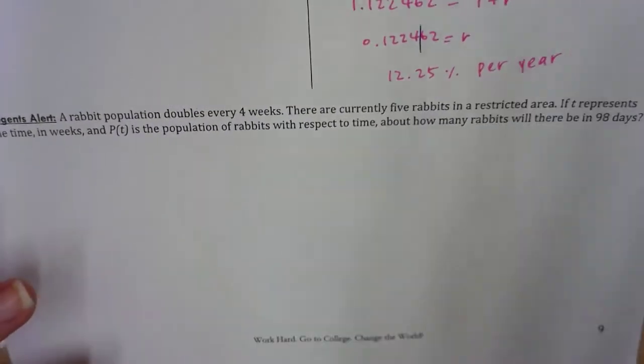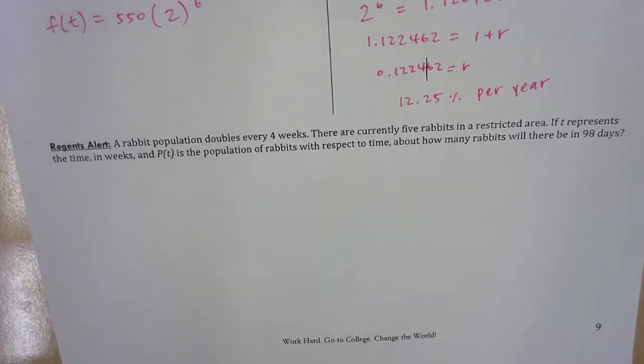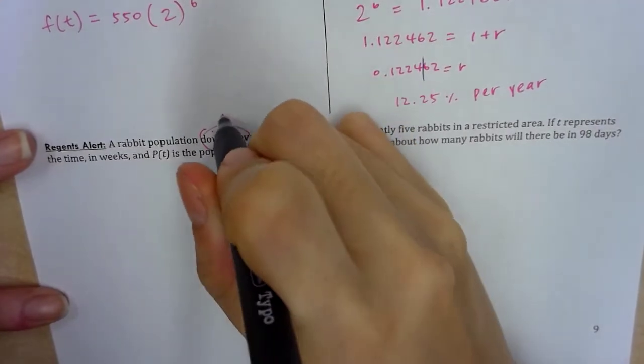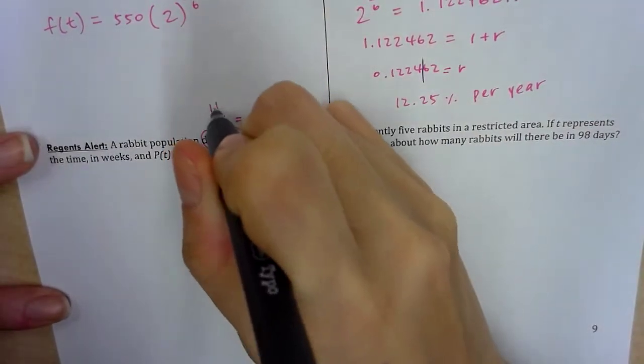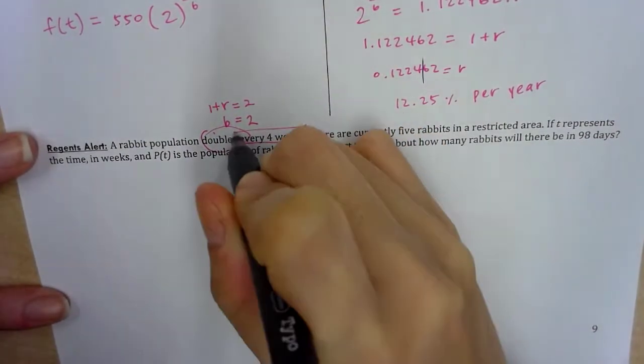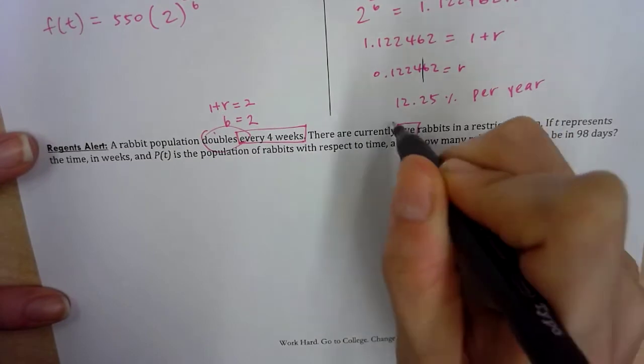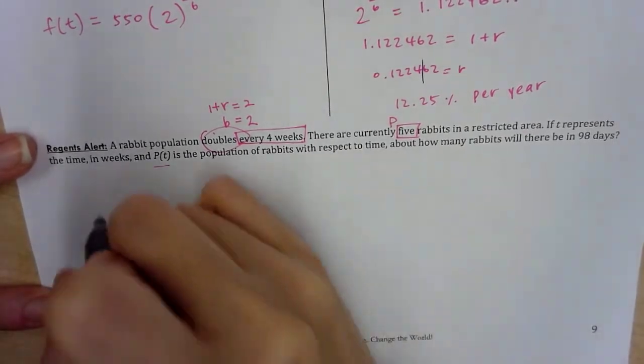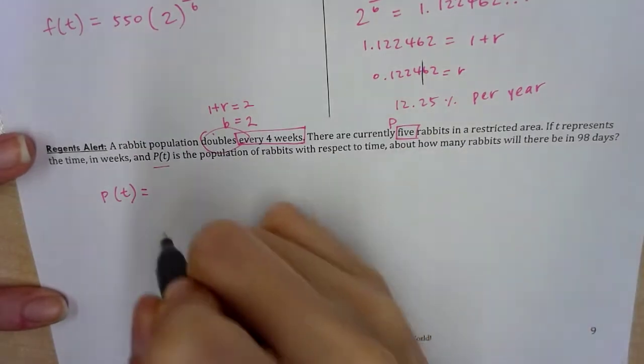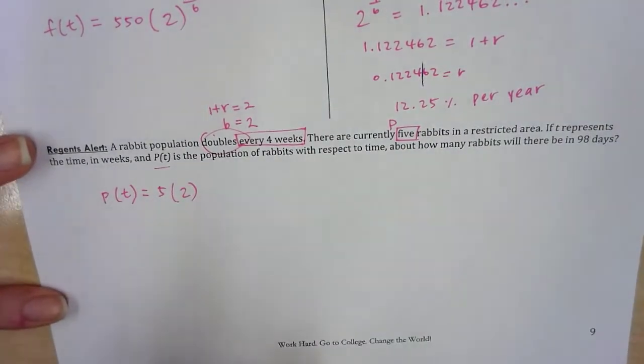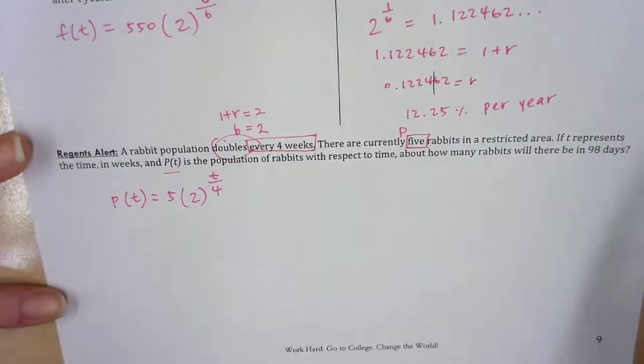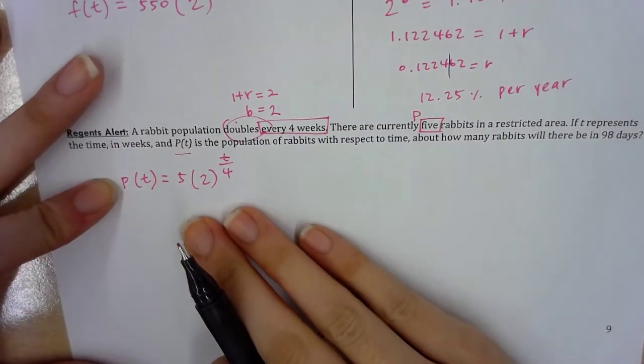I hope you annotated doubles, base is equal to two, or 1 plus r is equal to two. Every four weeks, five rabbits. p(t) is equal to initial value 5, and my base is two. Whenever it doubles, the base is two, and raise it to t over four. So hopefully, you paused here and you got this part right. But this is actually slightly tricky.